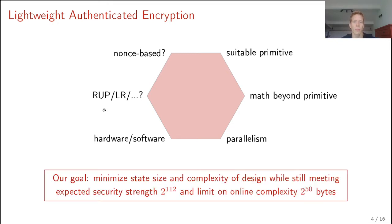And the goal that we actually set for lightweight crypto kind of determines the scheme we want to make. And for Elephant, our goal was to minimize the state size and the complexity of design, so getting as simple as design as possible, while still meeting the expected security strength of 2 to the 112, and the limit on the online complexity of 2 to the 50 bytes as prescribed by the NIST call for proposals. So this is our goal, a scheme with a minimal state size and a scheme that is as simple as possible.